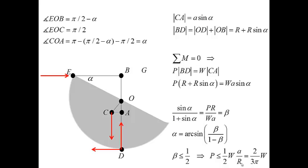This is known from a table. And therefore, the maximum value of the force P, such that the circle does not flip, is equal to 2 over 3π times W. 2 over 3π is a little bit larger than 0.2.